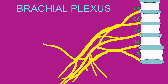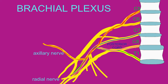As ventral rami of spinal nerves interweave to form the posterior cord of the brachial plexus, they give rise to two major nerves: the axillary nerve, which goes to the shoulder region and innervates the deltoid, and the radial nerve, which goes down the posterior portion of the arm and innervates the triceps and the wrist and finger extensors.